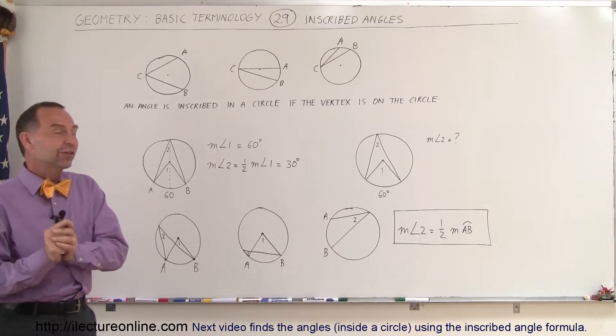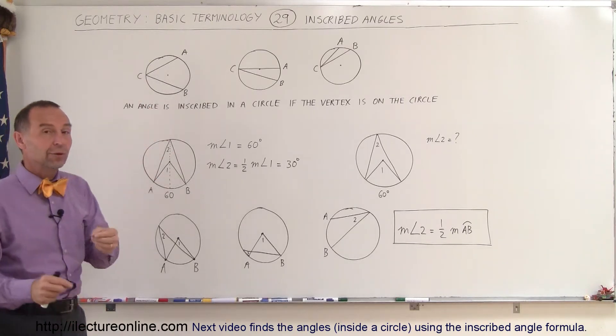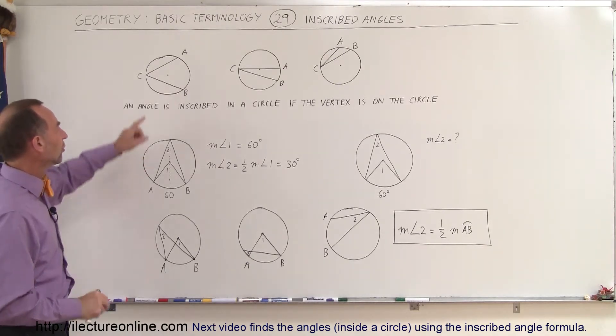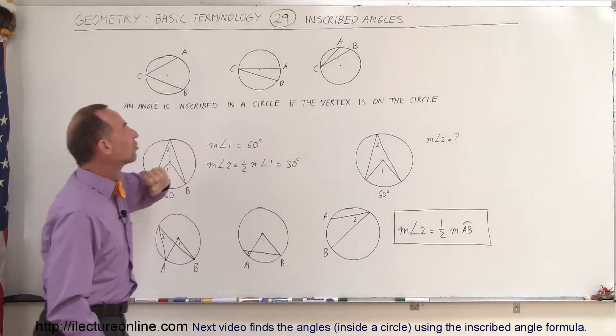Now the inscribed angle has its vertex at the edge of the circle. Remember, for a central angle, the vertex was at the center of the circle. So these are called inscribed angles.